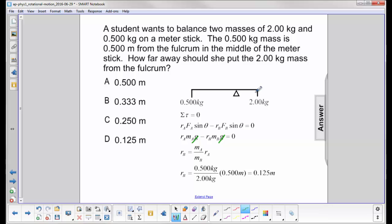So we have this distance here is going to be the mass of A over the mass of B times this distance. We put the numbers in and we find out, and this verifies our intuition. This is going to be closer to the fulcrum. The answer is D, 0.125 meters.